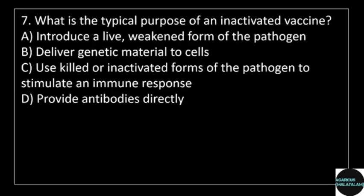7th question: what is the typical purpose of an inactivated vaccine? Answer options: option A, introducing a live weakened form of the pathogen; option B, deliver genetic material to cells; option C, use killed or inactivated forms of the pathogen to stimulate an immune response; option D, provide antibodies directly.